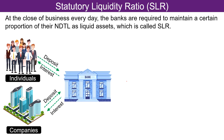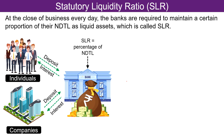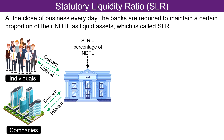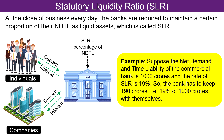Coming to Statutory Liquidity Ratio. At the close of business every day, banks are required to maintain a certain proportion of their net demand and time liabilities as liquid assets such as cash, gold, and investment in specified instruments, which is called SLR. In simple words, SLR refers to the percentage of net demand and time liabilities that banks are obligated to keep with themselves as reserves — the bank cannot provide loans with this amount. For example, suppose the net demand and time liability is 1000 crores and the rate of SLR is 19%, so the bank has to keep 190 crores — i.e. 19% of 1000 crores — with themselves.